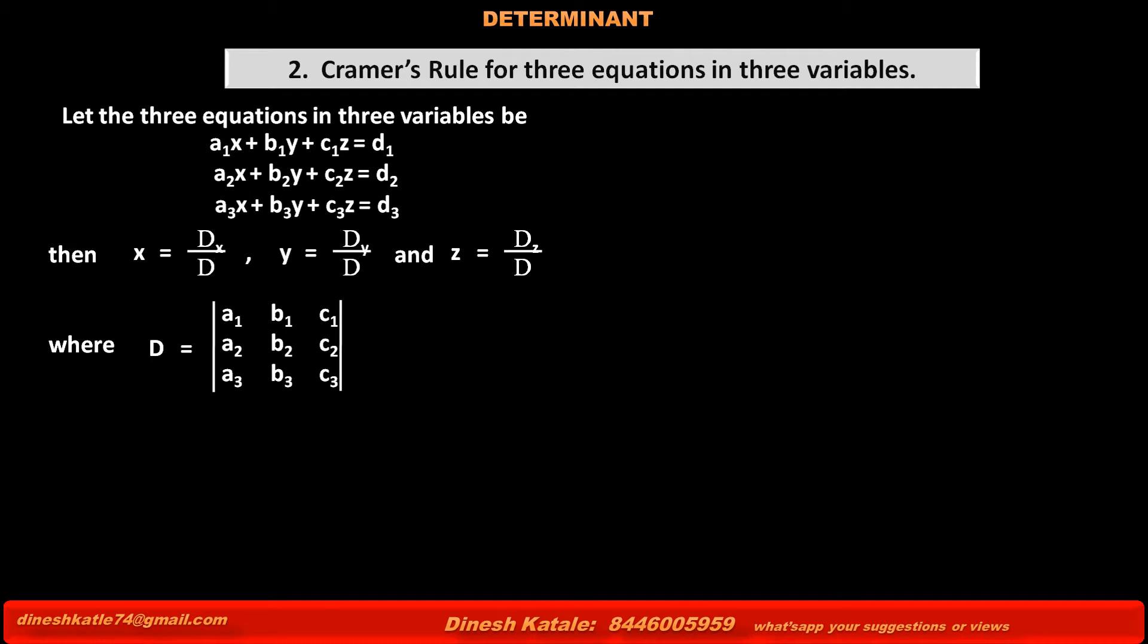And third row is a3, b3, c3, coefficients of x, y, z of third equation. This is a determinant of coefficients of x, y, and z of the above three equations.